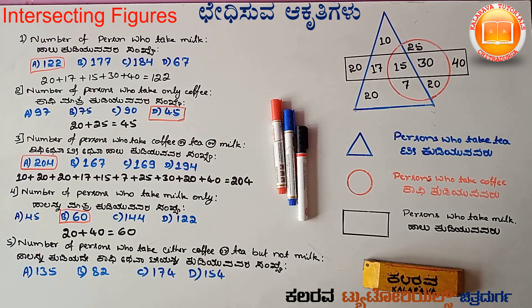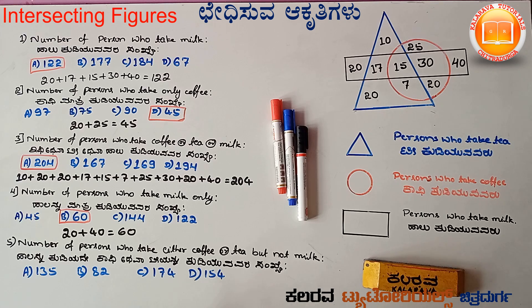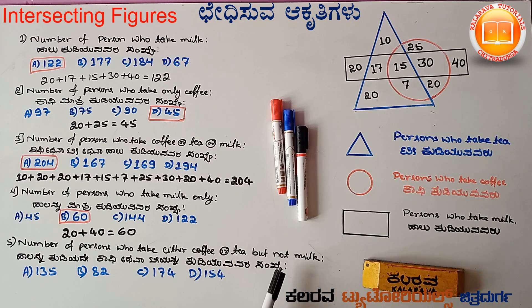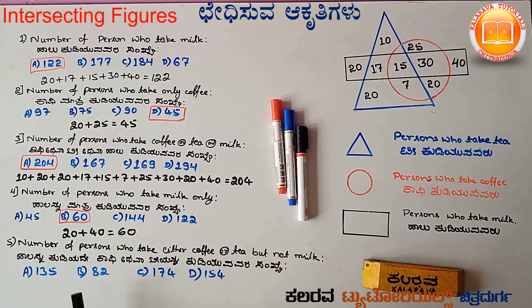Now we have to take the fifth question: number of persons who take either coffee or tea but not milk. That means coffee-tea is not milk — we exclude anyone inside the rectangle.